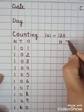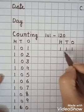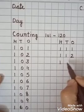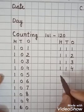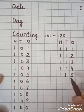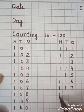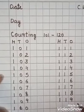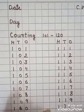Then, write down here: H, T, O. Then write: 1, 1, 1 — 111. 1, 1, 2 — 112. 1, 1, 3 — 113. 1, 1, 4 — 114. 1, 1, 5 — 115. 1, 1, 6 — 116. 1, 1, 7 — 117. 1, 1, 8 — 118. 1, 1, 9 — 119. Then here: 1, 2, 0 — it's 120.